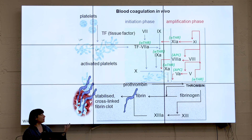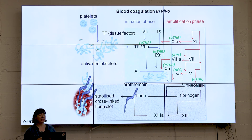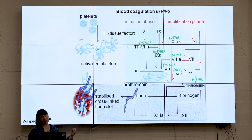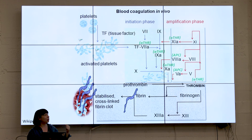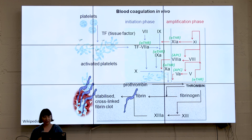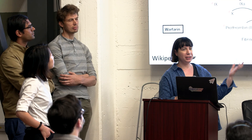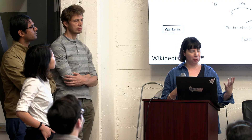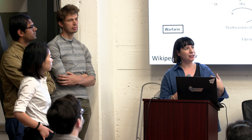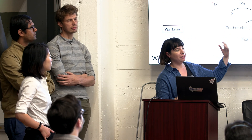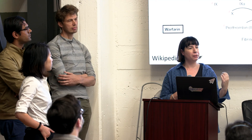Why blood clotting? Firstly, it's really important. Secondly, it's really complicated — it involves things across many scales, from nanoscale clustering of proteins up to macroscale properties like fluid dynamics, and huge numbers of proteins in a cascade. It has nanoscale properties relevant to what we are good at doing. Current treatments are systemic administration of blood thinners, often leading to bleeding — including bleeding in your brain. You can also get resistance to these treatments, and they're very non-specific. So we want specific treatments that are also reversible.